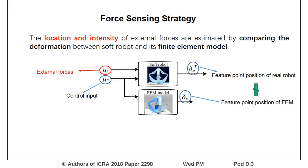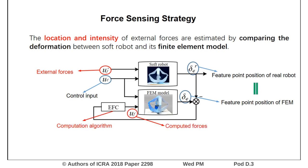When the external forces are applied on the real robot, the deformation of the soft robot will be different from its FEM model, so we can compute the relative displacement. Then, virtual forces can be computed to make the feature points of the FEM model track those of the real robot.